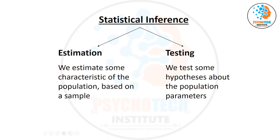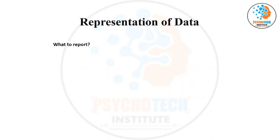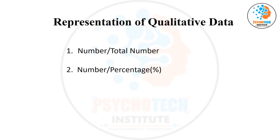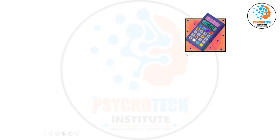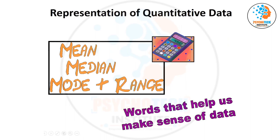We have two types of variables: qualitative and quantitative. If your variable is qualitative, it's a categorical variable, and we present it with number and percentage — number with total number. If it is a quantitative variable, we have many measures like mean, median, and mode. The choice depends on the distribution and type of variable.